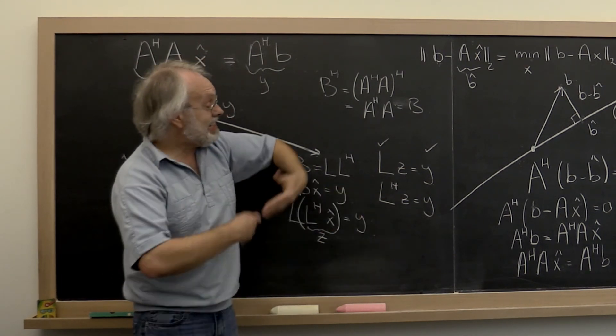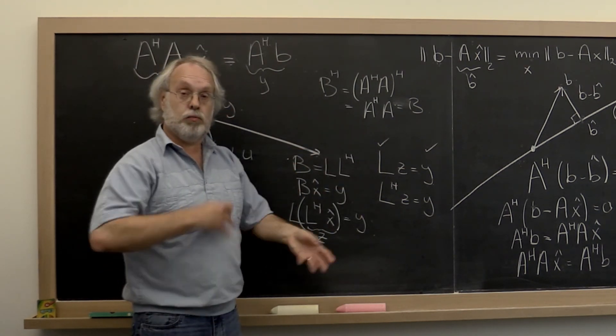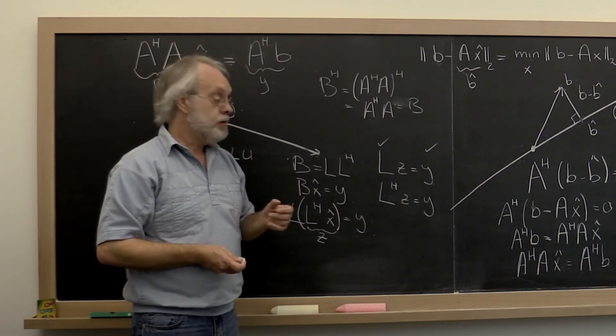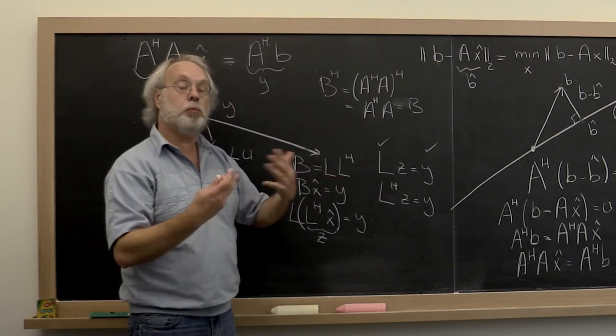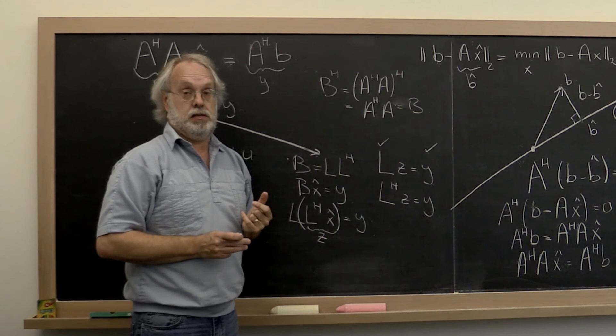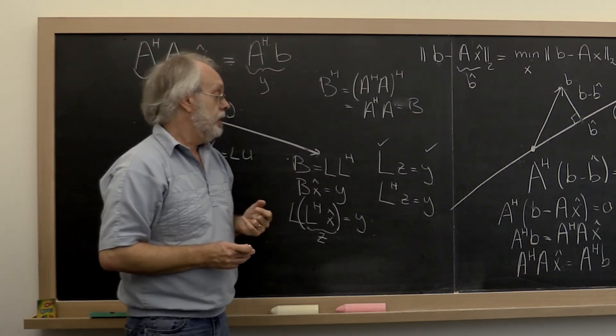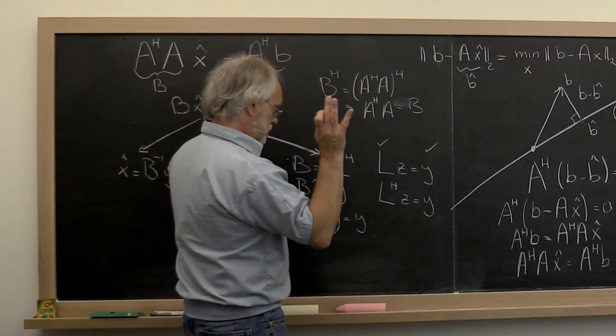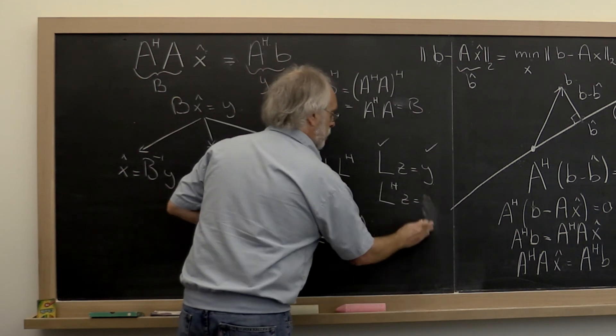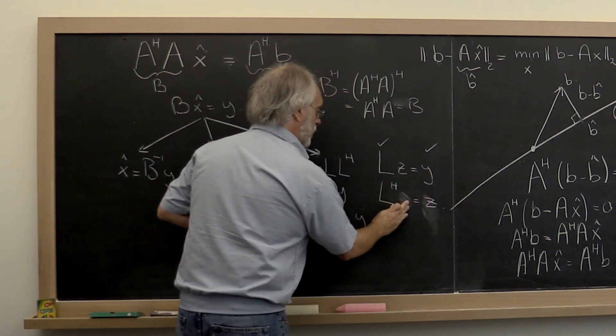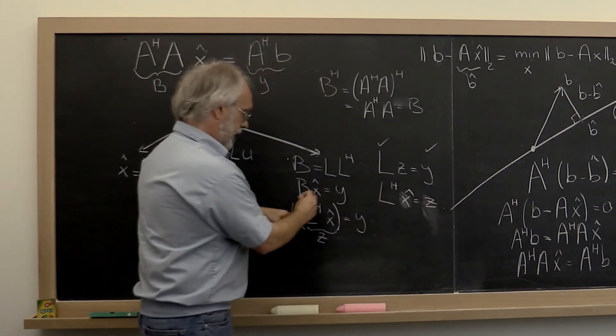Now you wouldn't want to explicitly transpose L because that would require a lot of data movement. But, you know, you want to compute as if it is an upper triangular matrix. And what that means is, whoops, we don't want to do that. We want to put Z here and we want to put X hat here because it came from here.